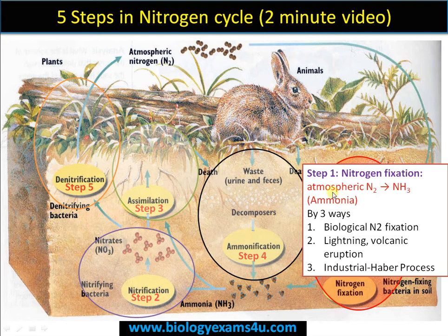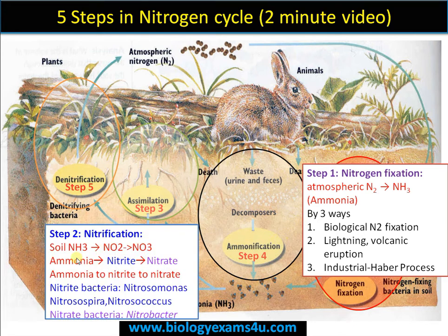The second step is nitrification. Now we have soil ammonia. Soil ammonia is converted to NO₂⁻ (nitrite), then converted to NO₃⁻ (nitrate). The first conversion — ammonia to nitrite — is carried out by nitrite bacteria.